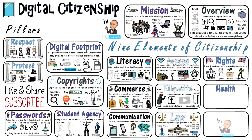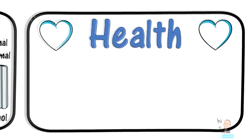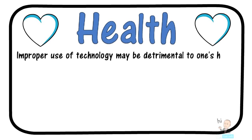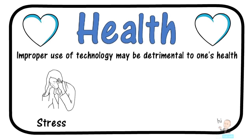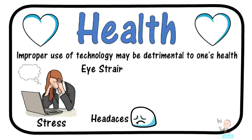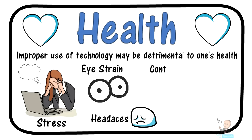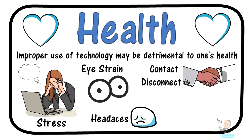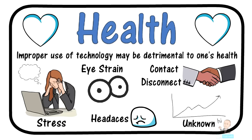And we're on to digital health. An improper use of technology may be detrimental to one's health. Research has shown that an increase in technology can lead to an increase in stress and anxiety — parents and children should be made aware of this. Individuals that overuse technology can get headaches and migraines. Other effects include eye strain, which can come from staring at your cell phone for hours at night, especially in a dark room. Too much of anything is never a good thing. Students often experience a contact disconnect, so let's not forget the importance of human interaction and face-to-face experiences. The long-term effects are relatively unknown.